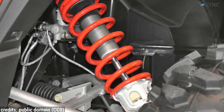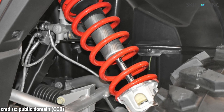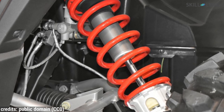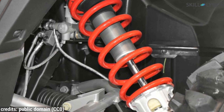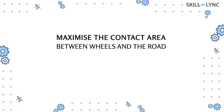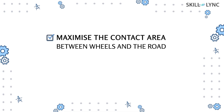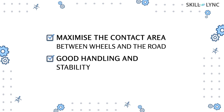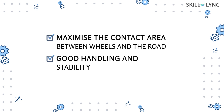The chassis of a vehicle is connected to the front and rear wheels with the help of springs and shock absorbers, which are together called the suspension system. The suspension system helps in maximizing the contact area between the wheels and the road, and also provides good handling, comfort, and stability to the vehicle.